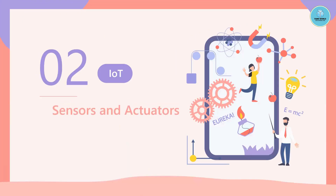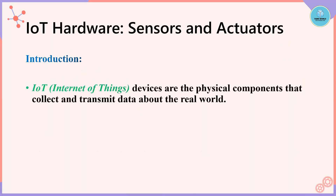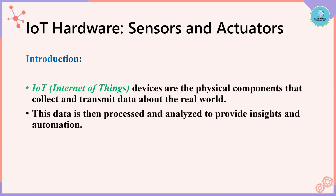The next topic is sensors and actuators — the IoT hardware. When we talk about IoT, that is the Internet of Things, devices are the physical components that collect and transmit data about the real world. This data is then processed and analyzed to provide insights and automation.